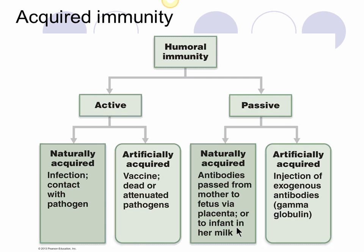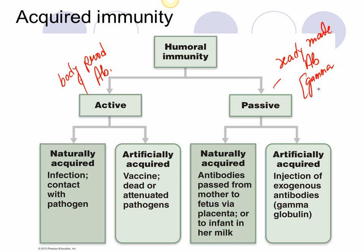We're going to talk a little more about humoral immunity. We divide it into two parts: active immunity and passive immunity. Active immunity is when the body produces antibodies — remember, in humoral immunity you have the production of antibodies. Passive immunity is when you're given ready-made antibodies, which are also known as gamma globulins, immunoglobulins, or immune serum. Passive immunity is often used when you want a quick response and can't wait for the body to produce antibodies.